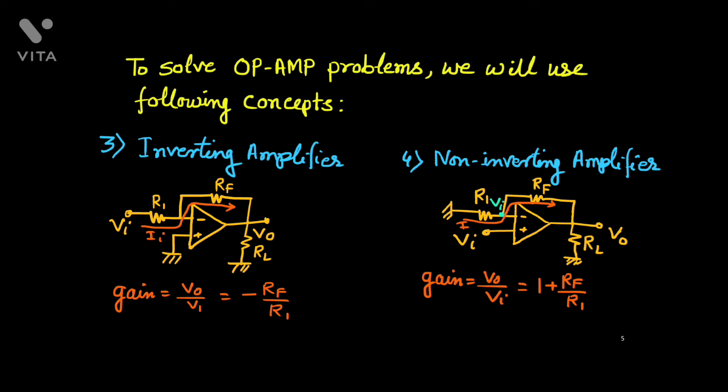The next concept is the non-inverting amplifier, where the voltage Vi is connected to the non-inverting terminal and the inverting terminal is grounded. In that case, the gain is given by positive 1 plus Rf upon R1. We can use these two formulas several times without re-deriving them whenever we find this kind of simple arrangement.